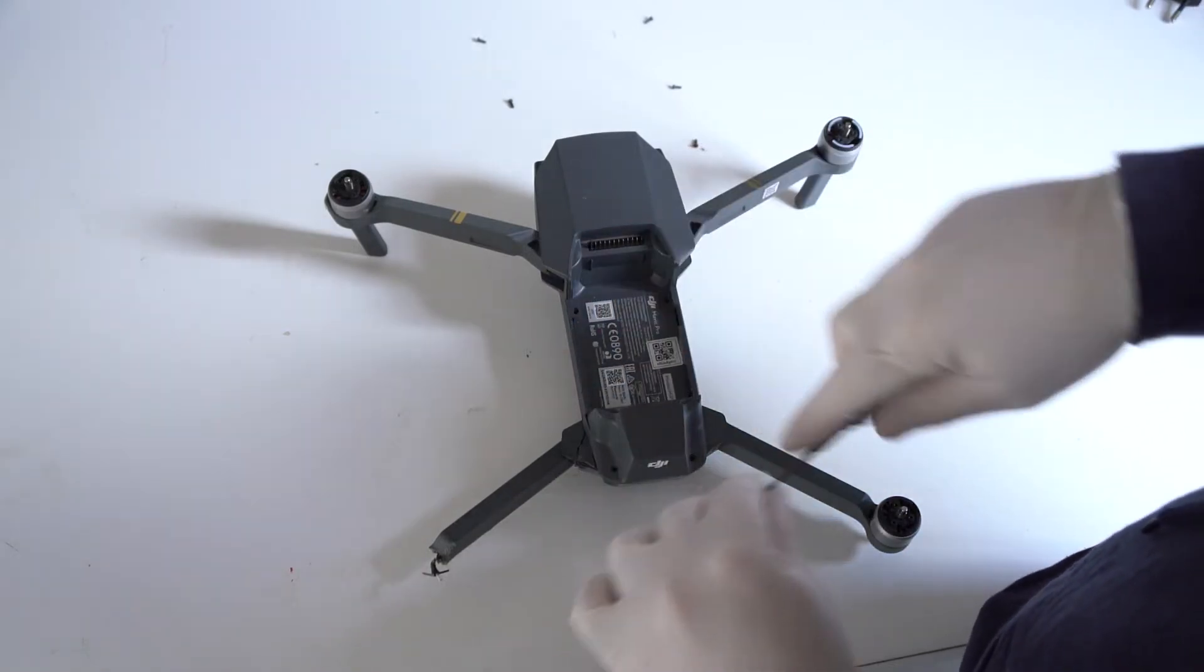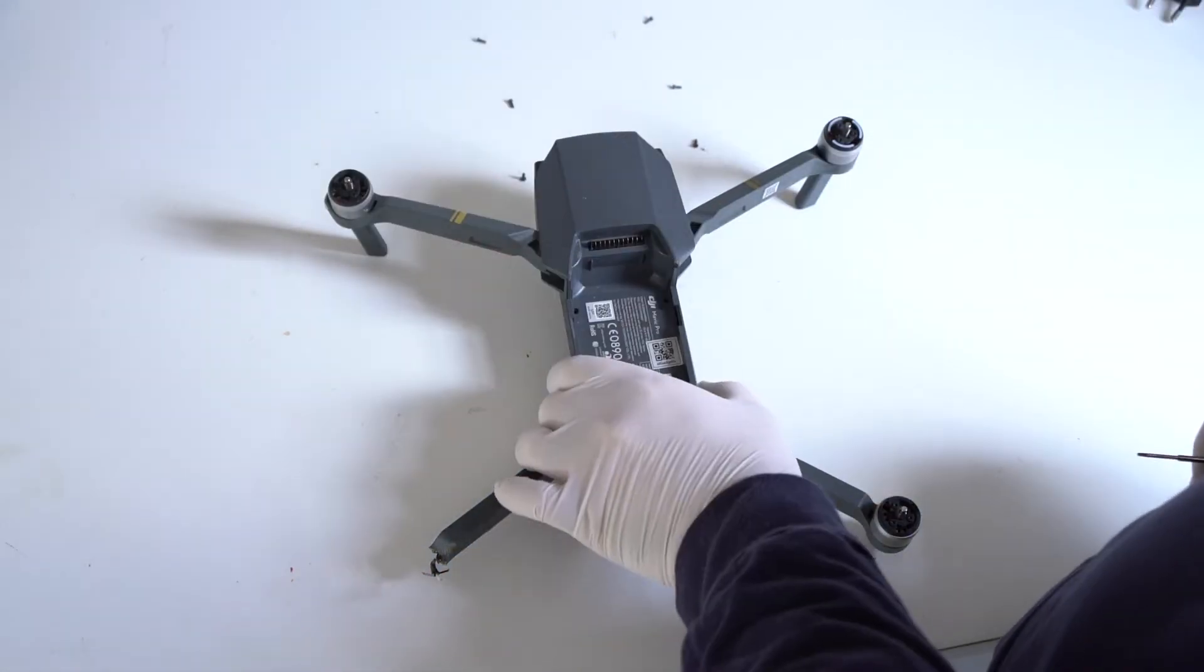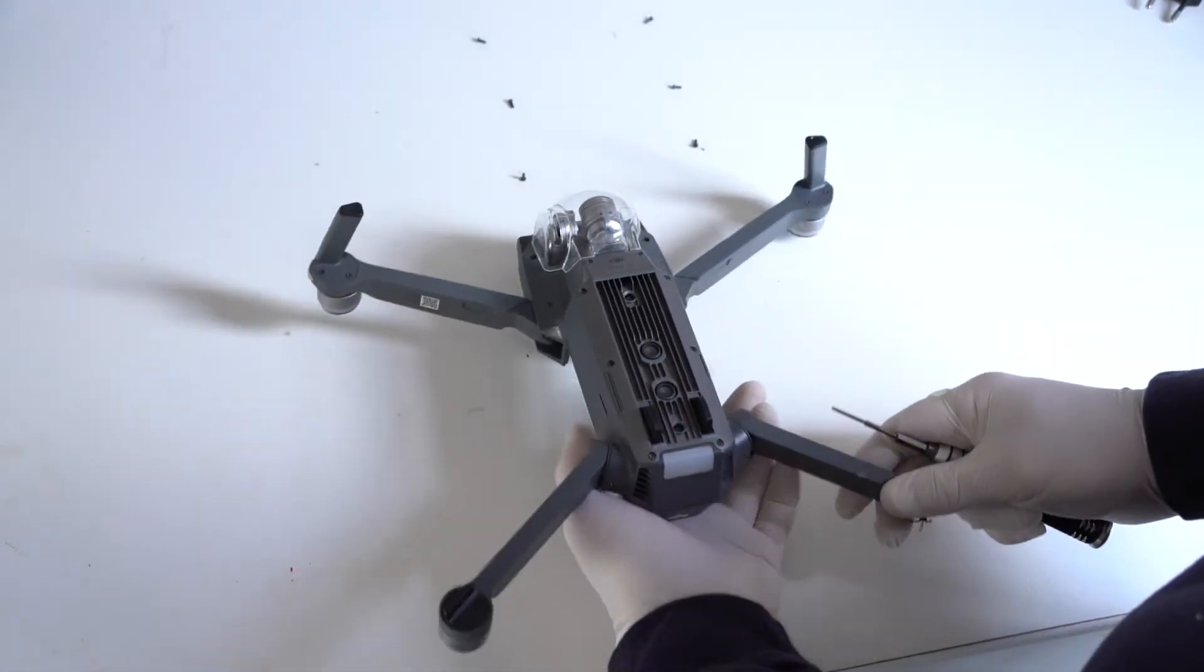Once you turn the drone around, there's two screws that are the top close to the gimbal. Take those out.